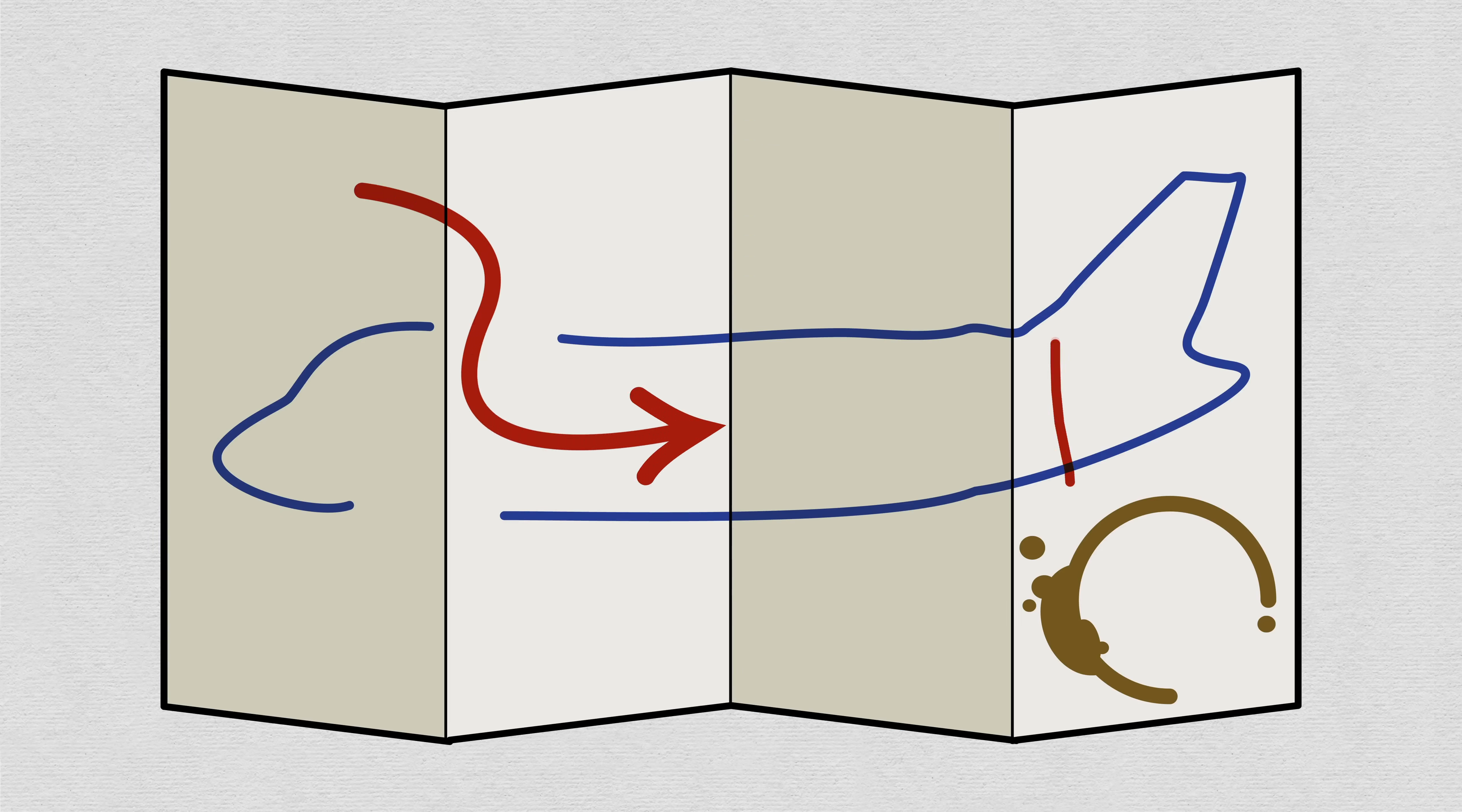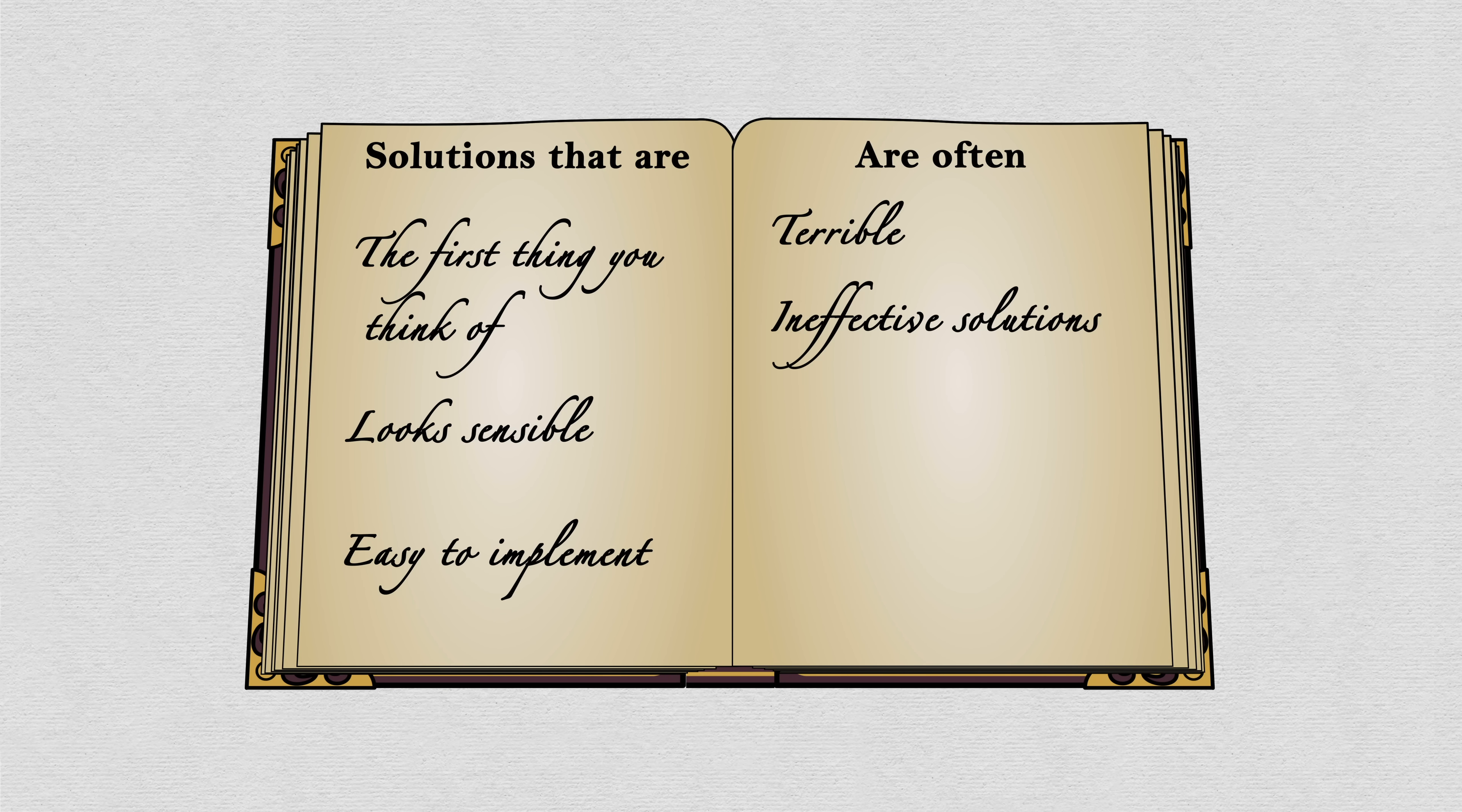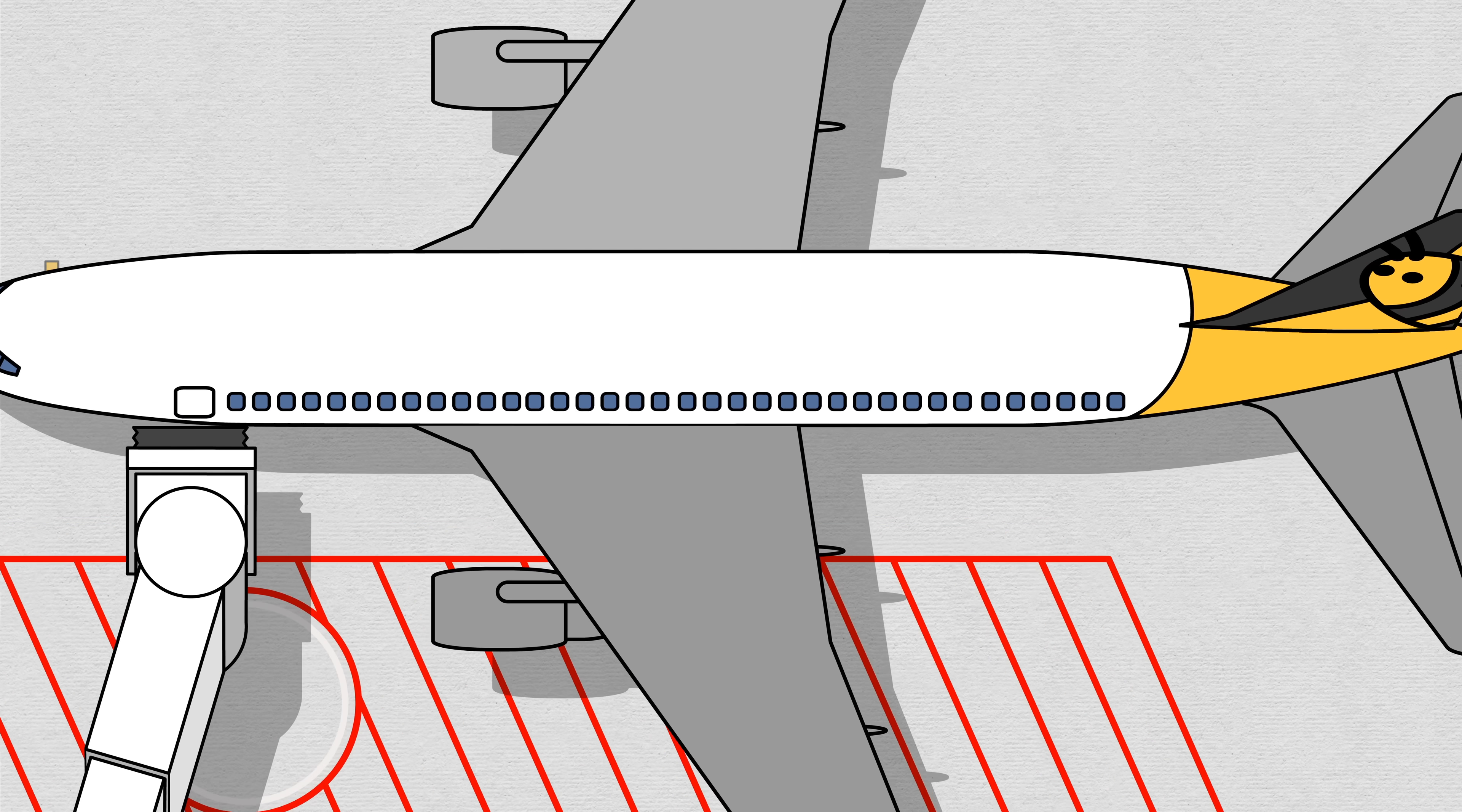Pour people into the plane back to front. This is an intuitive solution to fill a cylinder. But there's almost a law of the universe that solutions which are the first thing you think of and look sensible and are easy to implement are often terrible, ineffective solutions once implemented will drag on civilization forever. Cough, voting systems, cough. So it should come as no surprise that this method is not good and also what most airlines use to board their planes.